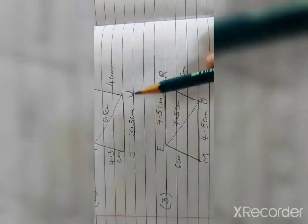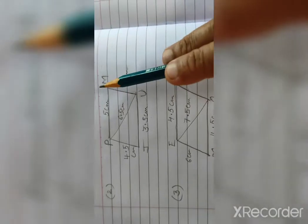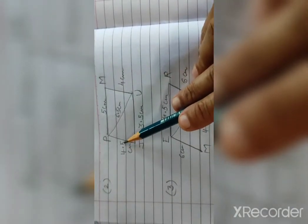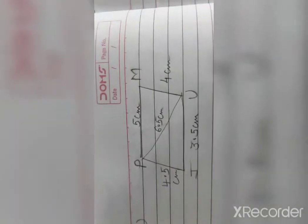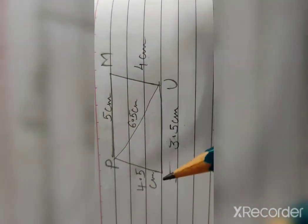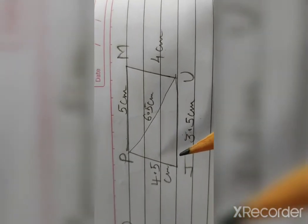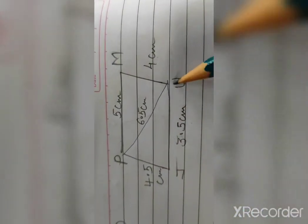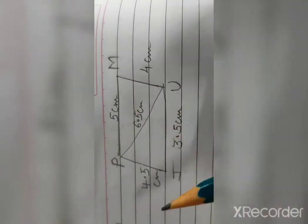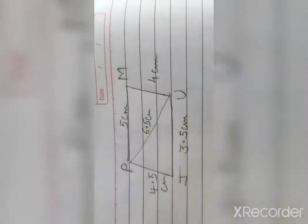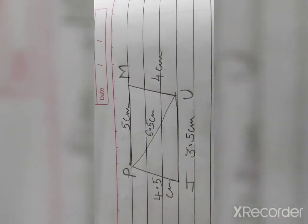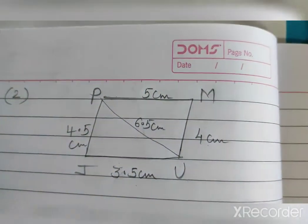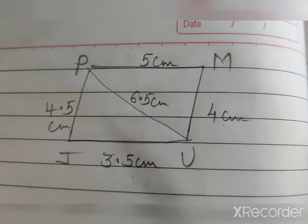So first what you will draw: J-U equal to 3.5 cm. From J, taking 4.5 cm radius, draw an arc. And from U, 6 cm radius, another arc — the intersecting point give the name P. From P taking radius 5 cm, draw an arc. And at point U, taking radius 4 cm, draw another arc which intersects at point M. I am explaining the rough diagram; now you will do yourself. If you want to draw diagonally, by that method you can do.